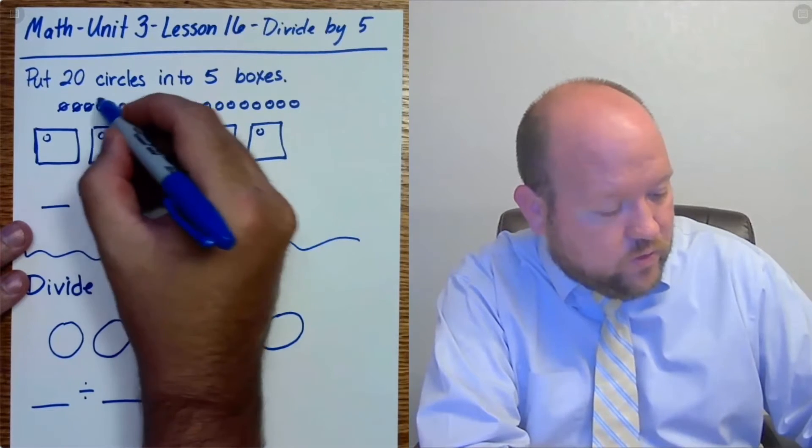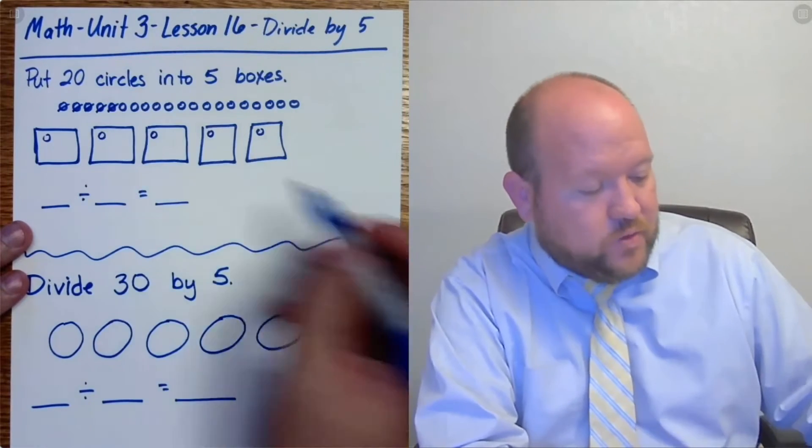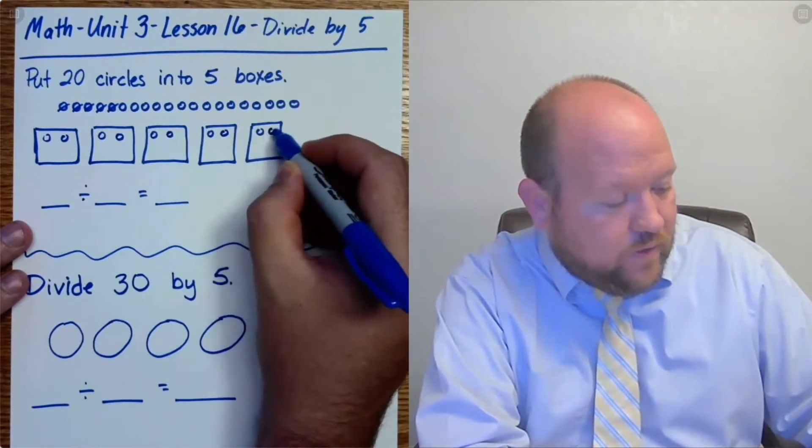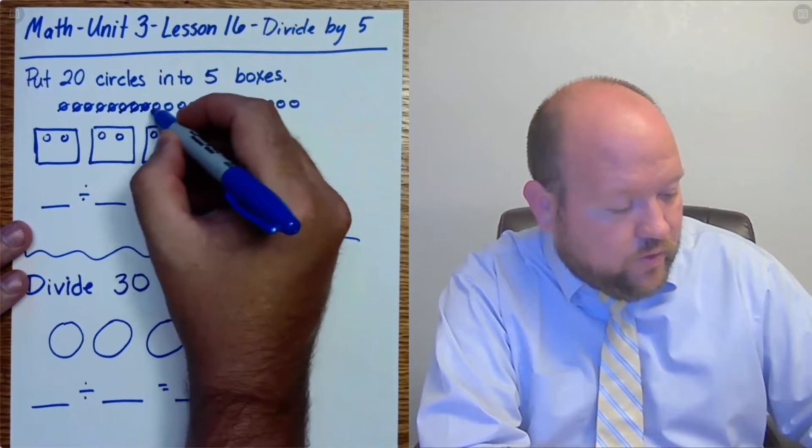So I'll knock that out. 1, 2, 3, 4, 5. Now let's do another 5. 1, 2, 3, 4, 5. 1, 2, 3, 4, 5.